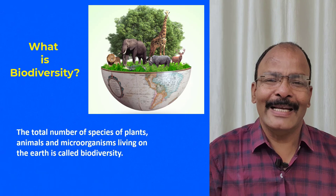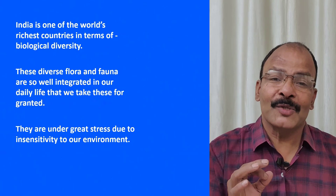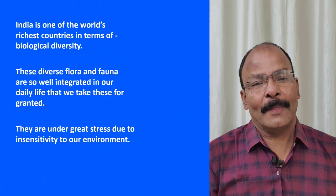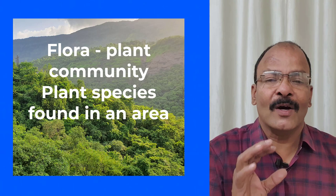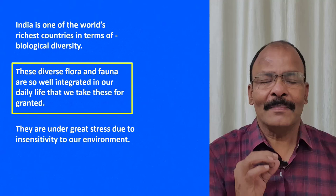Biodiversity means the total number of species of plants and animals, including microorganisms, that are living on the earth. India is one of the world's richest countries when it comes to biological diversity. When I say flora, it refers to the plant community or plant species found in a particular area. Fauna means the animal species found in a particular area.